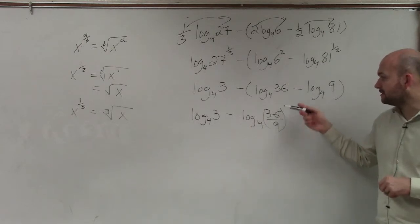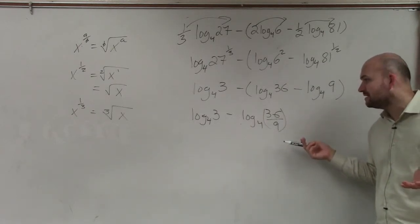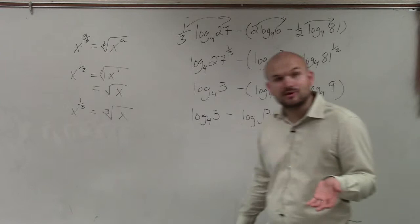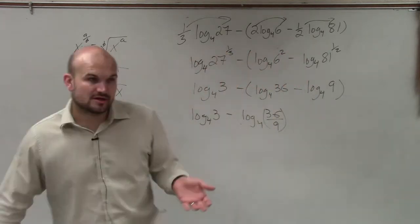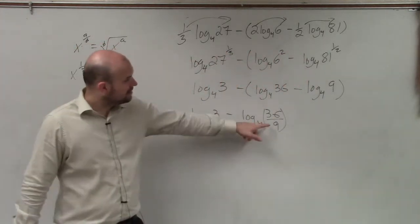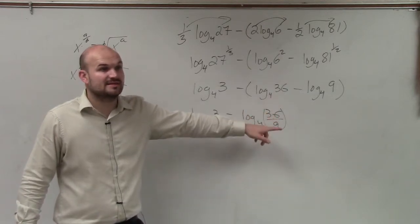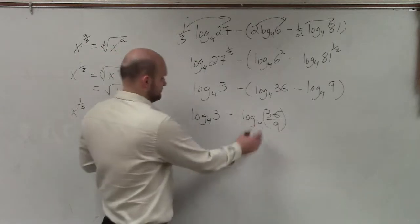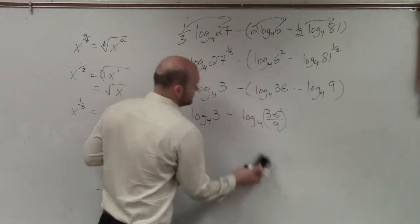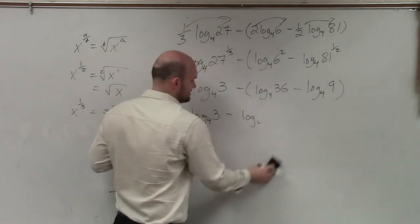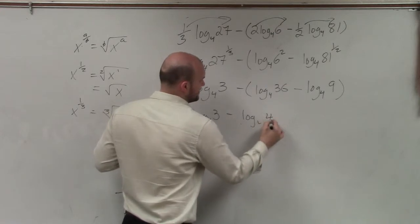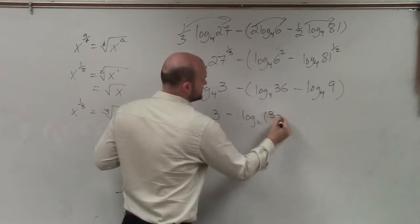Now, I can simplify this. I can divide by 3 in the top and the bottom. Actually, 9 goes into 36 how many times? 4. So 36 over 9 equals 4.